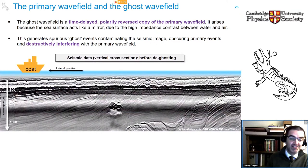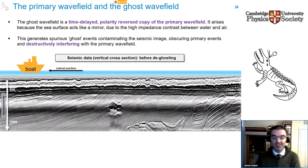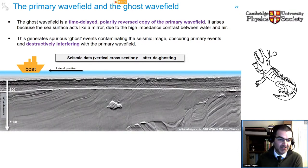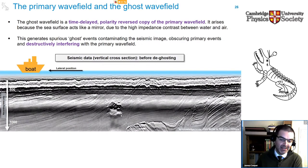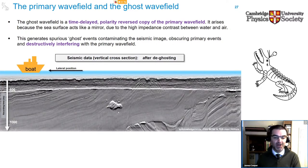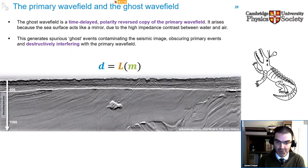This is what de-ghosting looks like on seismic data. We're looking at a vertical cross-section showing the boat, the water column, and the structure of the subsurface beneath. This is the seismic data before de-ghosting and after de-ghosting. As I toggle those two slides, you can see that after de-ghosting, we've revealed a much more simple and interpretable structure. In particular, this nice localized structure was obscured by its own ghost before de-ghosting, which is nicely removed after. This result has been achieved using an inversion-based scheme.